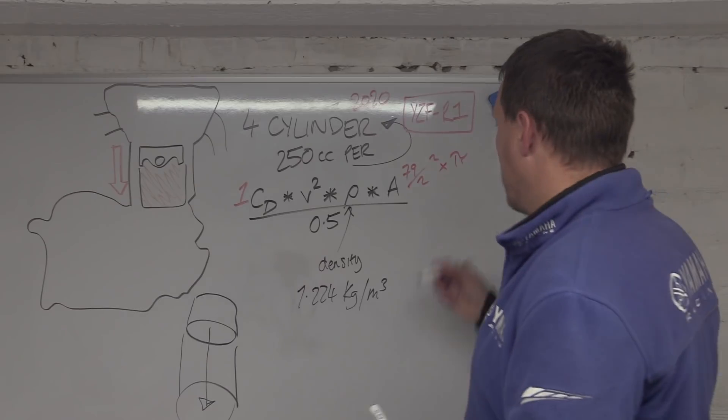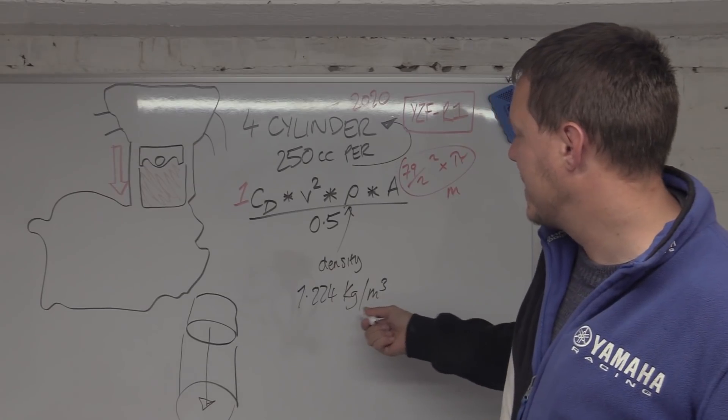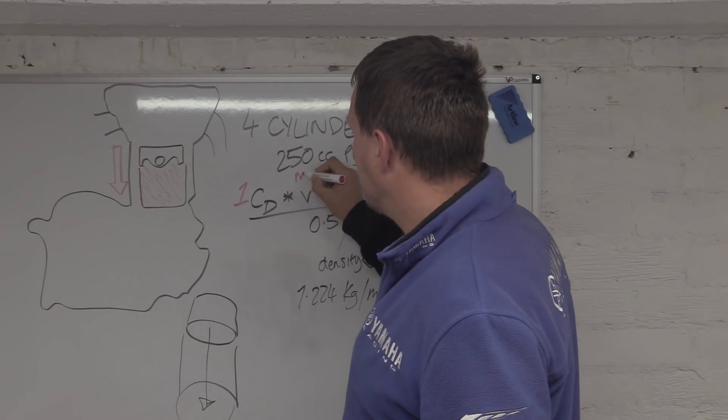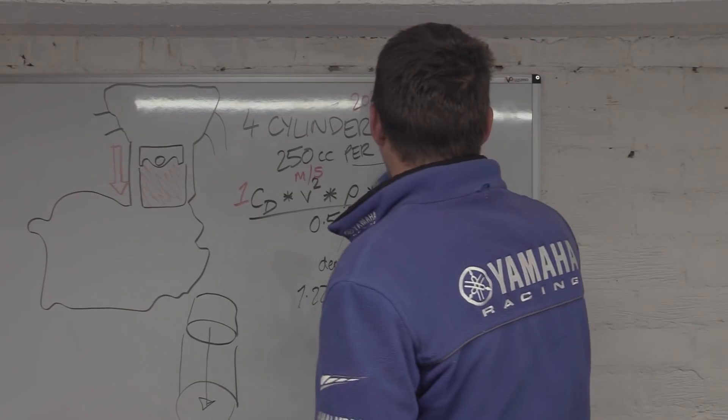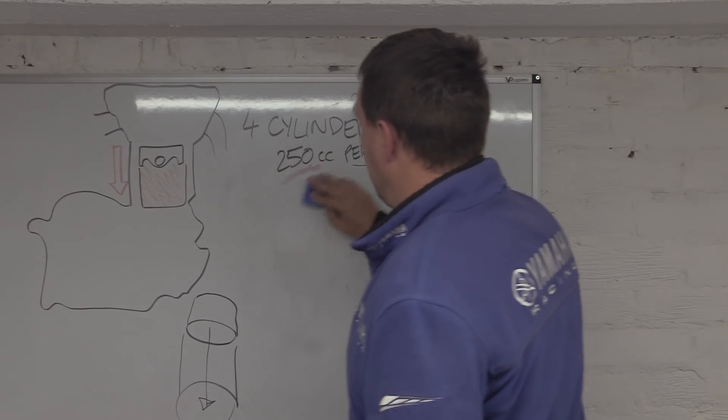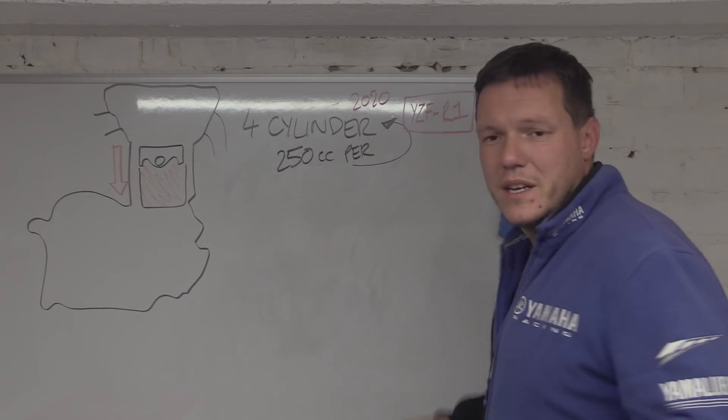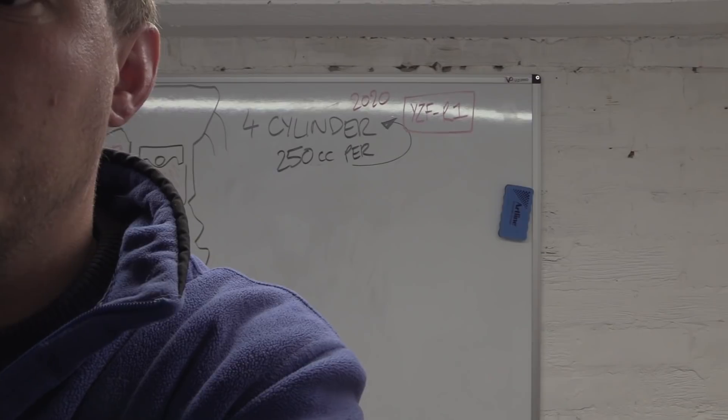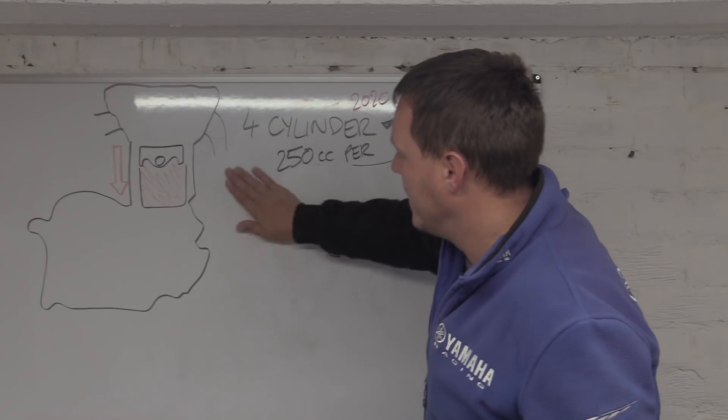The bore was 79, so the area is 79 divided by 2 squared times pi, pi r squared basically to work out your area. We've got to do that in meters, so this is all in meters. Your density is in kilograms per cubic meter, our velocity is in meters per second, and then 0.5.